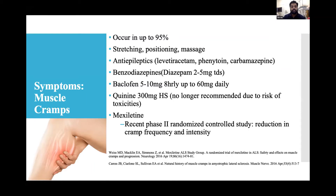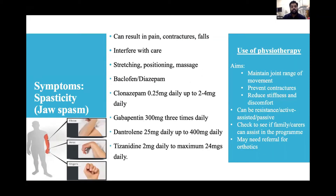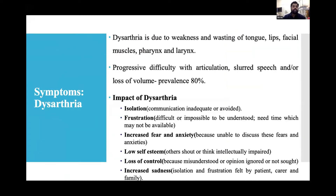Spasticity results in pain, contracture, and falls, and interferes with care. Non-pharmacological treatment: stretching, positioning, and massage. Pharmacological: baclofen, diazepam, clonazepam 0.25 mg daily up to 2–4 mg daily; gabapentin 300 mg TDS; dantrolene 25 mg daily up to 400 mg daily; tizanidine 2 mg daily up to 24 mg daily. Physiotherapy referral is also important — the aim is to maintain joint range of movement, prevent contracture, reduce stiffness, via active, assisted, or passive exercises.